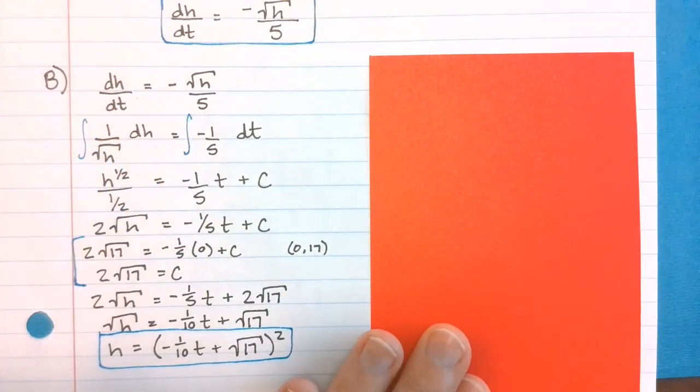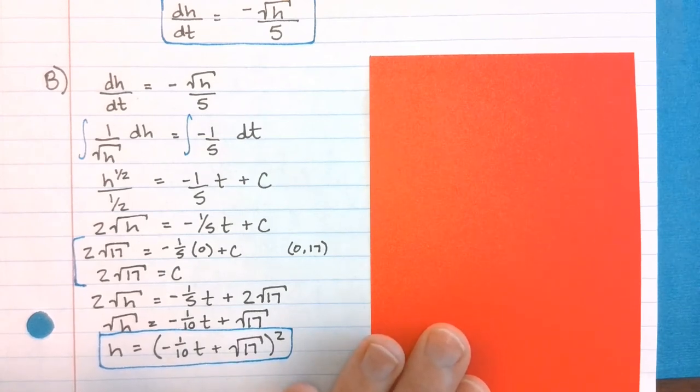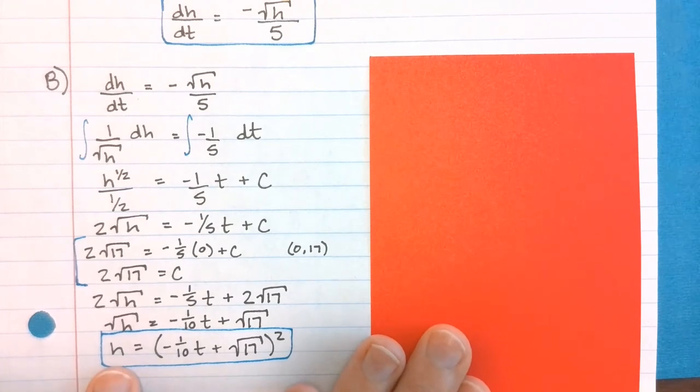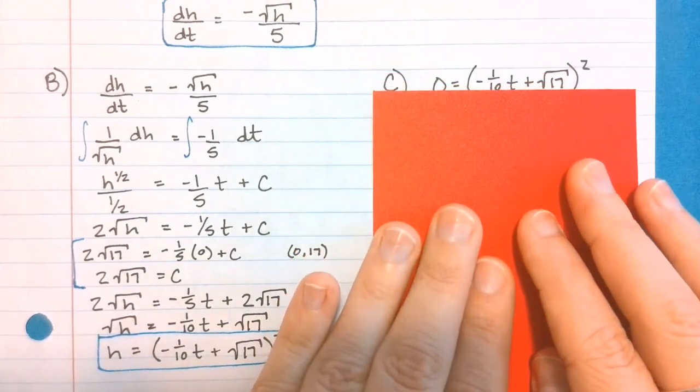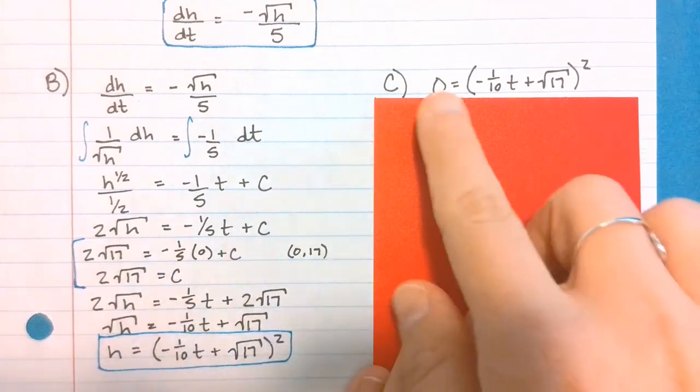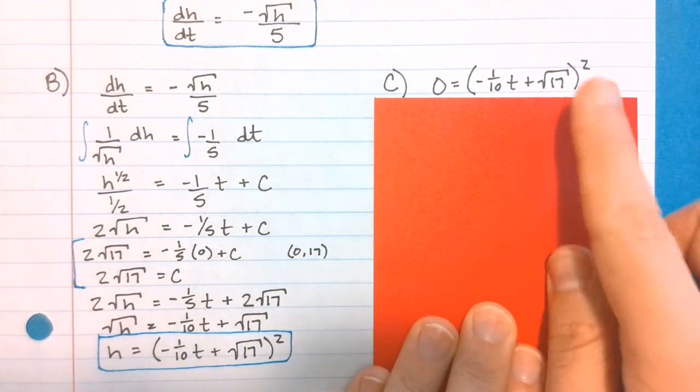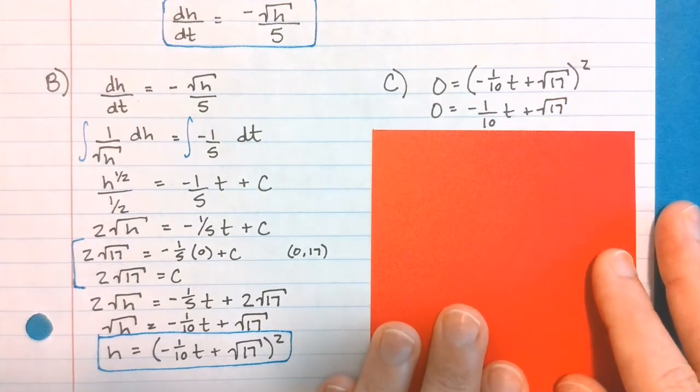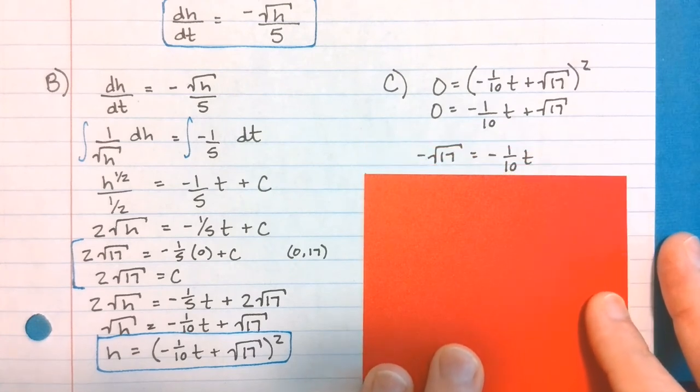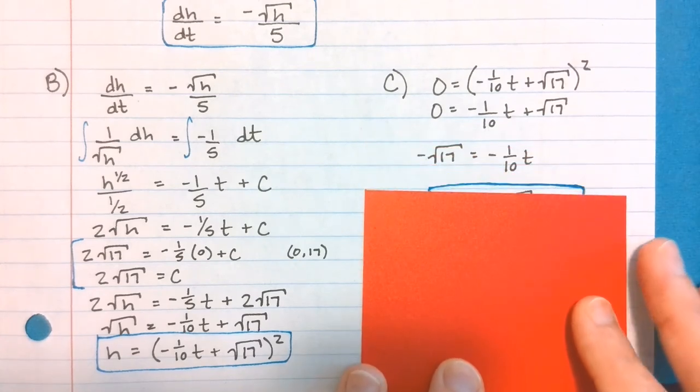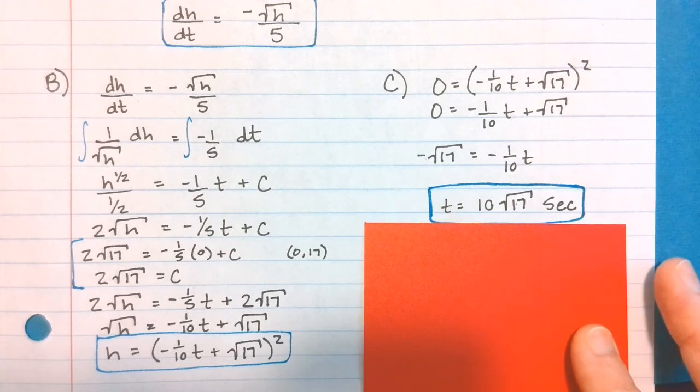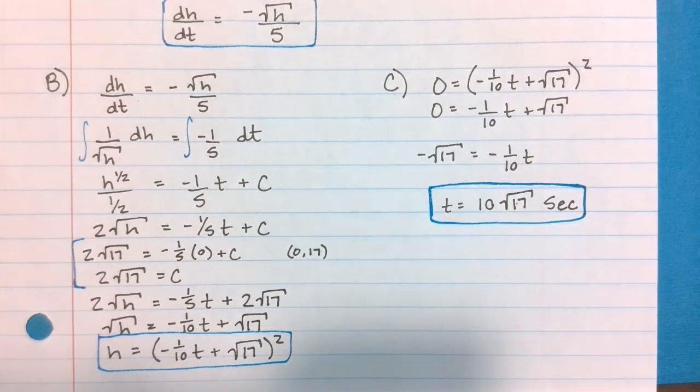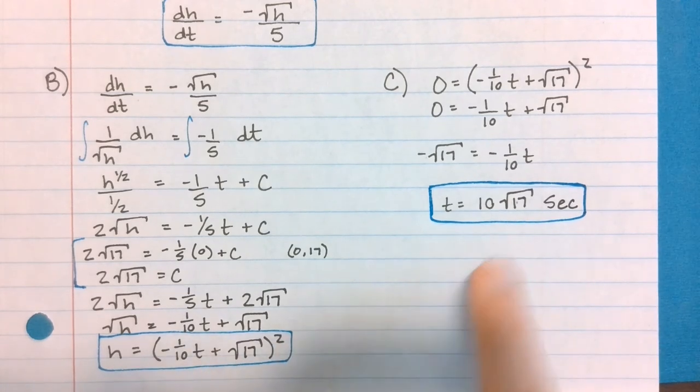Part C wants to know when is the coffee pot empty, which piggybacks off the last one. If the coffee pot is empty, that means the height is 0, so I'm really just being asked to set my height equal to 0 and solve. I'm taking the square root of both sides, subtracting √17 from both sides, and then multiplying both sides by negative 10. I get that happens when t equals 10√17 seconds. I don't feel like you need to simplify anything like this, leave it as is.